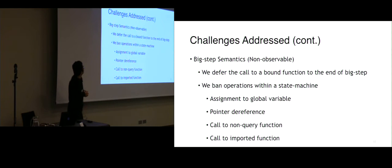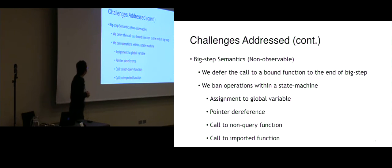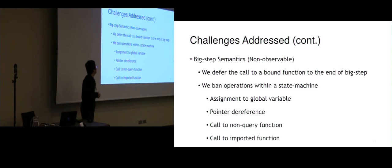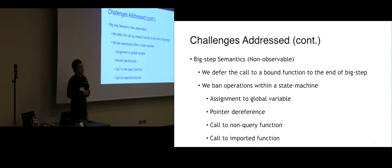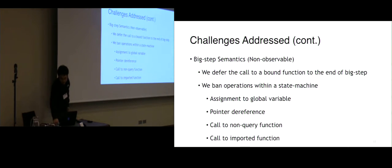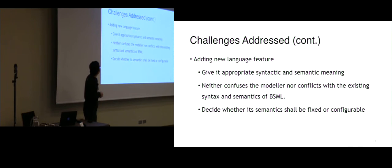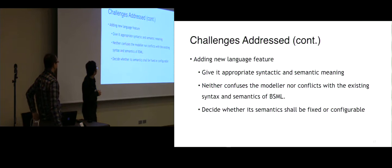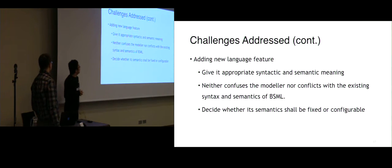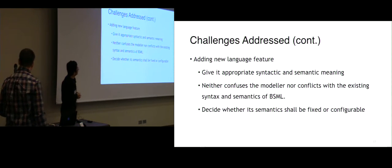The next challenge is implementing big step semantics — the execution within a big step must not be observable until the end of the big step. To achieve this, we defer calls to bound functions to the end of the big step, and we bind operations within a state machine — like assignment to global variables, pointer references, calls to non-query functions, calls to imported functions, and any operations that could change the environment during state machine execution. Adding new language features also presents a challenge: we need to give each feature an appropriate meaning that doesn't confuse modelers or conflict with existing syntax and semantics, and we need to decide whether its semantics should be fixed or configurable.